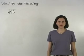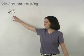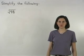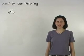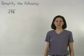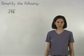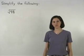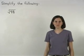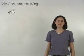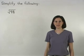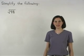Here, we're asked to simplify the square root of 98. The difference with this example is that 98 is not a perfect square. In other words, it's impossible to find a whole number times itself which equals 98. However, it's important to understand that the square root of 98 can still be simplified.